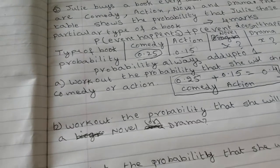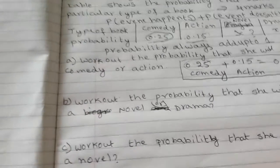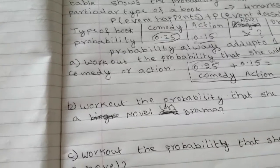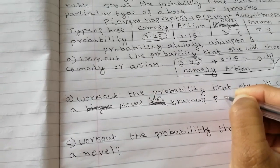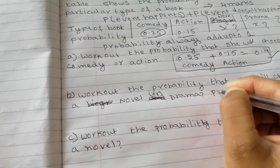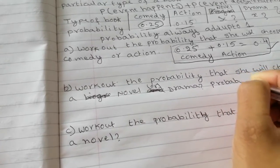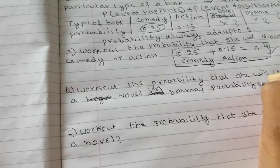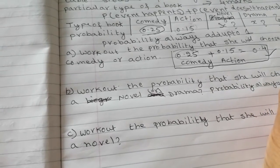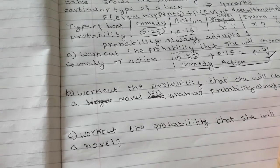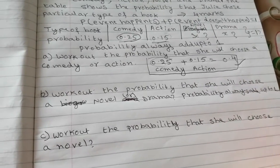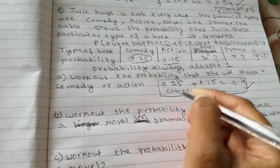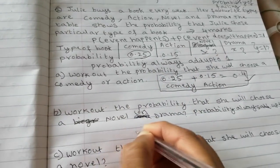Work out the probability that she will chose novel or drama. Now we need to use probability always add up to 1. So we already know comedy and action is 0.4.